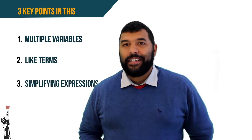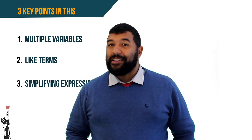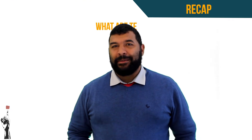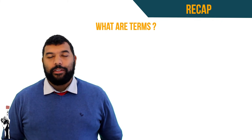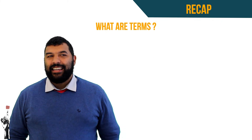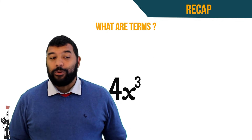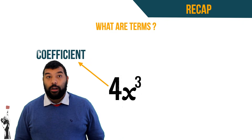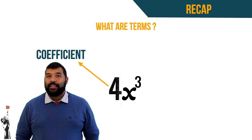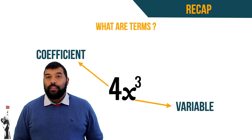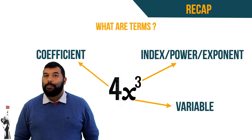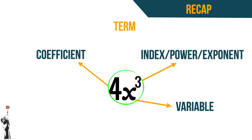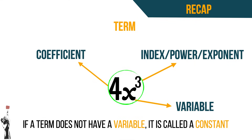From the last lesson we realize we no longer just talk about single variables but we talk about terms. Let's recap what terms are. Take for example 4x cubed. In 4x cubed, the 4 represents the coefficient, the x represents the variable, and the 3 represents the index, the power or the exponent. If a term does not contain a variable it is called a constant.